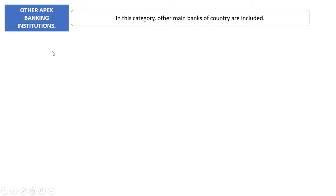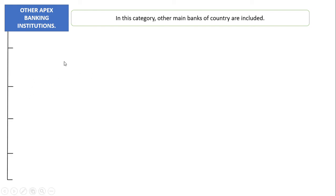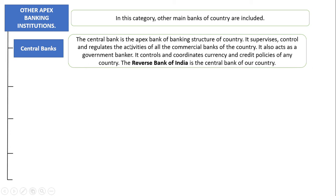Next is the category of Other Apex Banking Institutions, which includes the main banks of the country. The first is the Central Bank — the apex bank of the banking structure of a country. It supervises, controls, and regulates the activities of all commercial banks of the country.